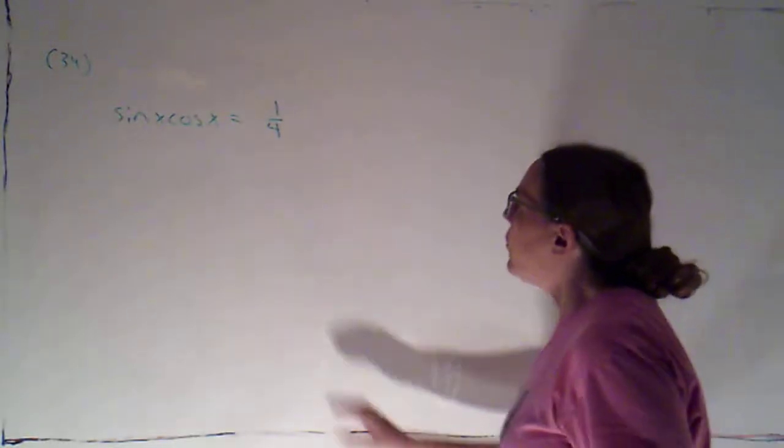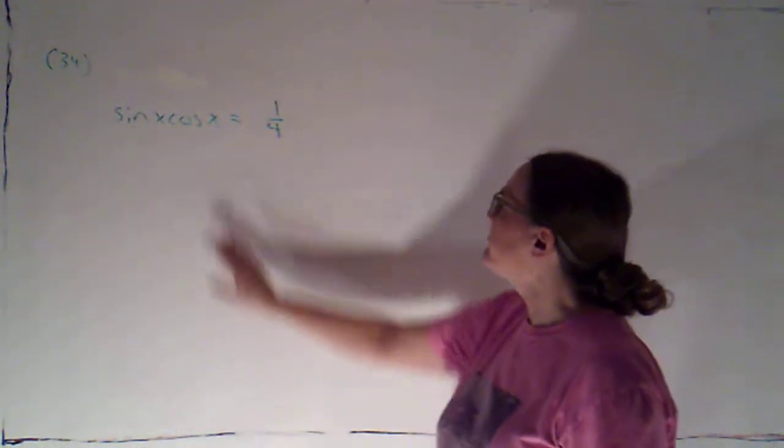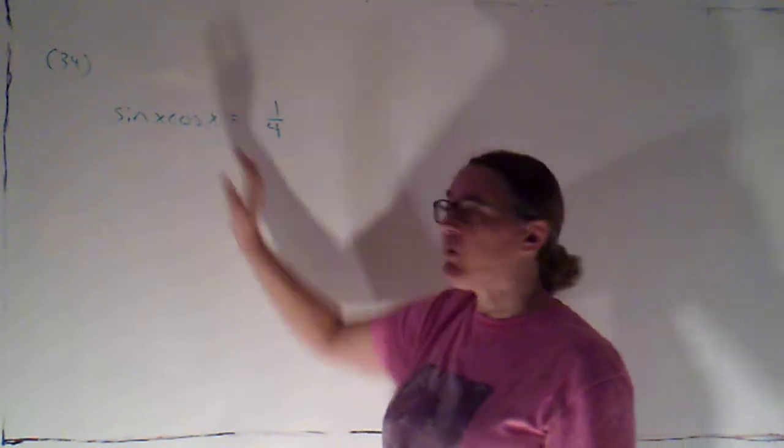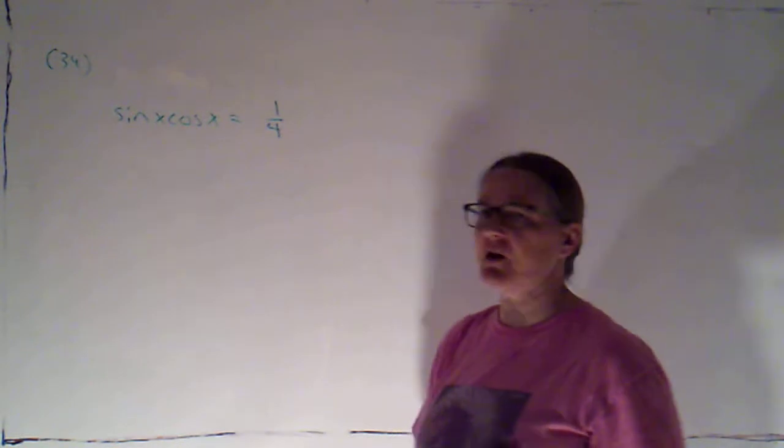Alright, here's an example where I've got a trig equation. I've taken an even-numbered problem from the book here. I've got a trig equation where there's only one angle involved, just x. But there are two different trig functions, sine of x and cosine of x.